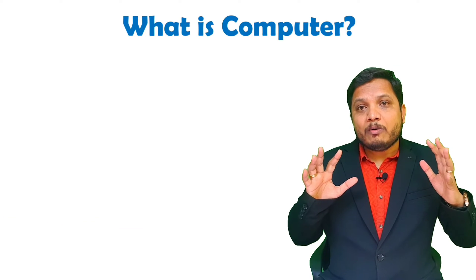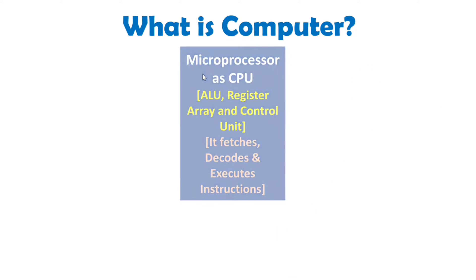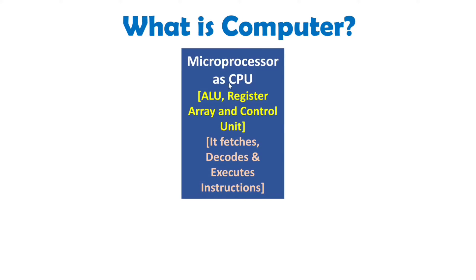Let us see the computer in terms of a block diagram so it will be more clear to you. The microprocessor — also referred to as the CPU — has three major elements: ALU, register array, and control unit, and it performs execution of instructions. To execute instructions, first it needs to fetch the instructions, then it will decode the instruction, and then it will execute the instructions.